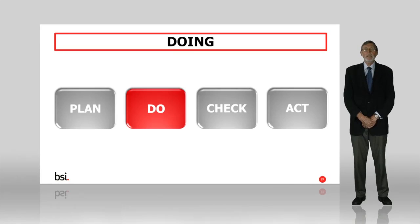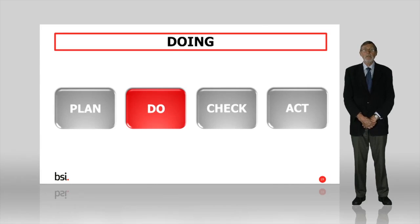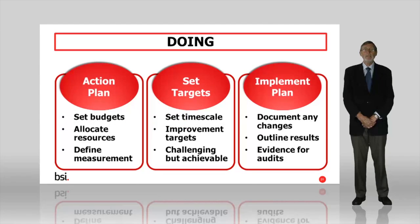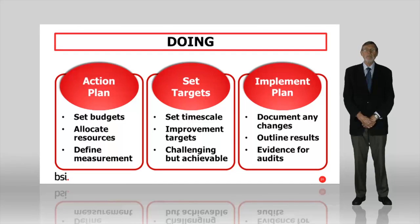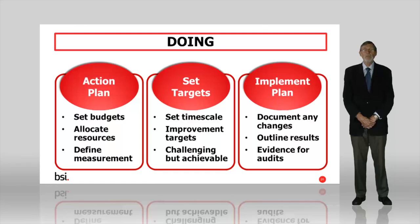The planning phase is now complete and you're ready to start the doing phase. First, draw up an action plan. This includes setting budgets with top management, assigning your resources — both financial and manpower — and deciding how to measure improvement. You'll also need to set some targets. Give yourself a clear timescale, say two years, and include regular targets for continual improvement. These should be challenging but achievable, as targets that are too easy or too hard can demotivate staff and weaken their commitment. Make sure you get the balance right.